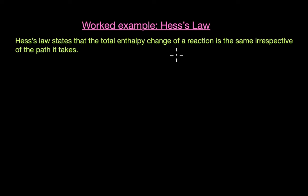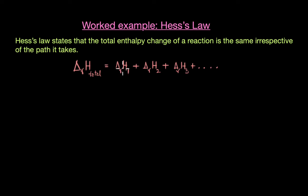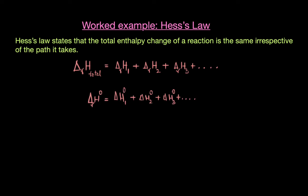The total enthalpy change for a reaction can be expressed as the sum of the enthalpy changes of the individual reactions it can be broken into. Under standard conditions, this transforms into: the total standard enthalpy change of a reaction is equal to the sum of the standard enthalpy changes of the individual reactions or steps it can be broken into.